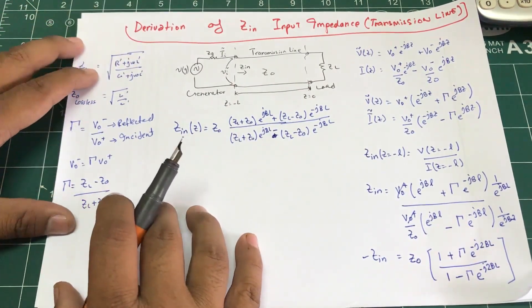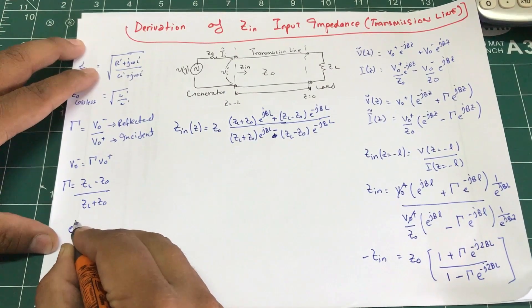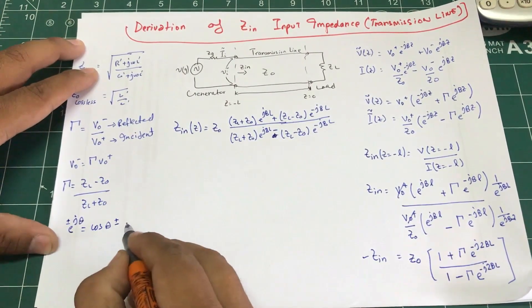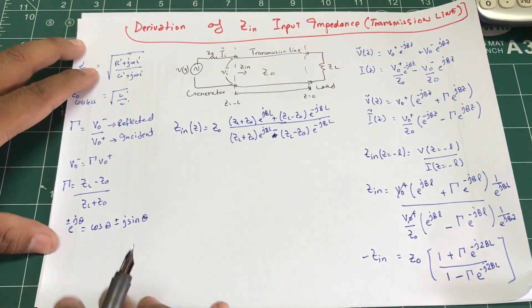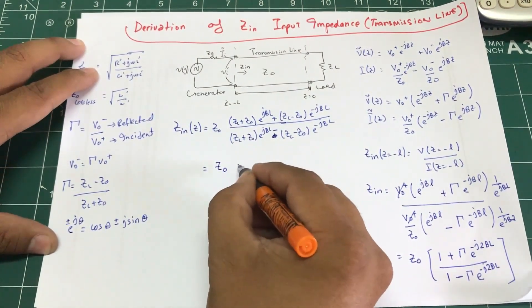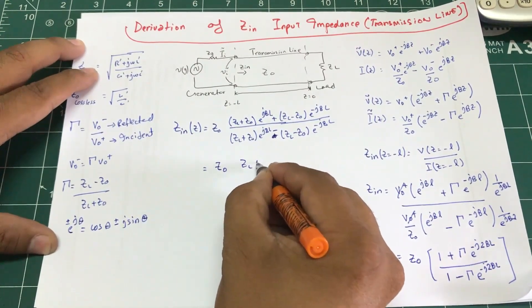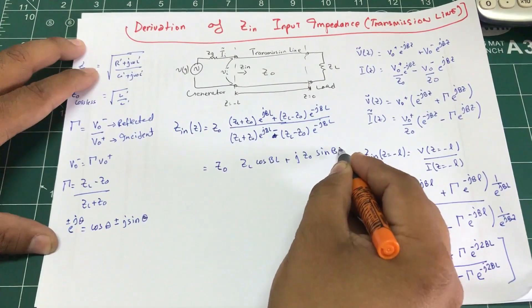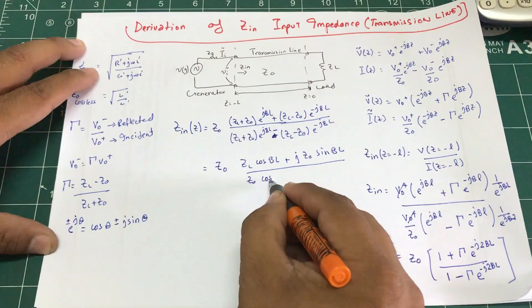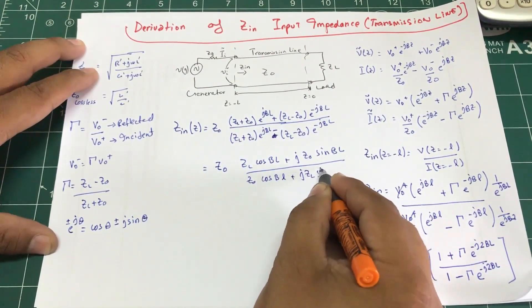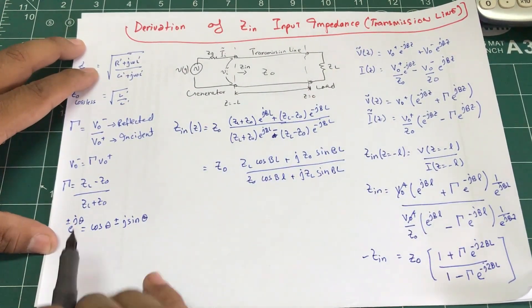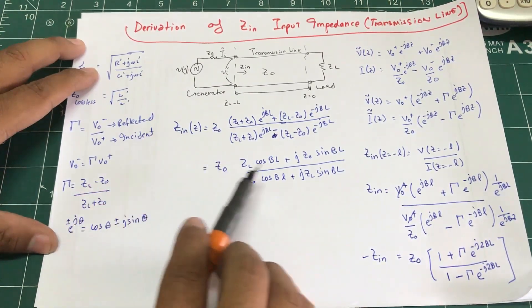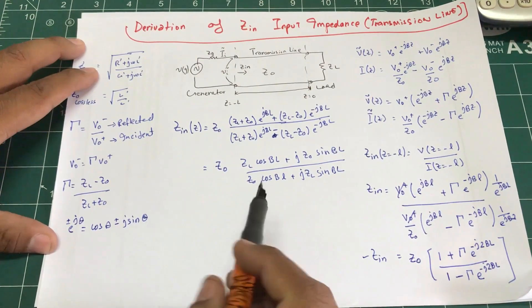Applying Euler's identity, e^(±jθ) = cosθ ± j sinθ, and expanding, the numerator and denominator become combinations of cosines and sines. This yields Z_in = Z₀ · (ZL cosβL + jZ₀ sinβL) / (Z₀ cosβL + jZL sinβL).